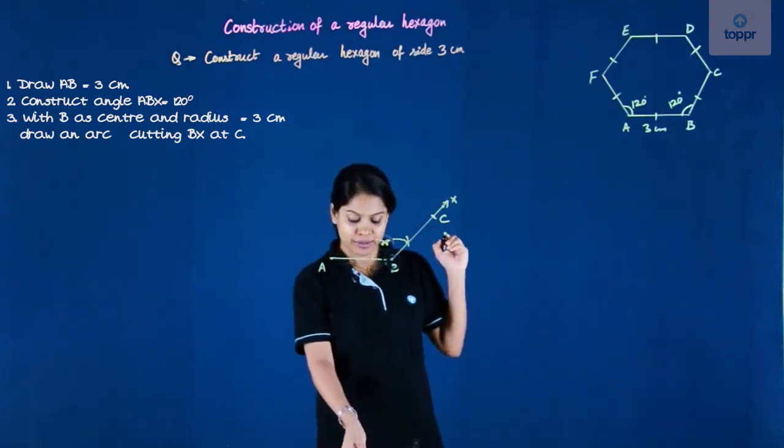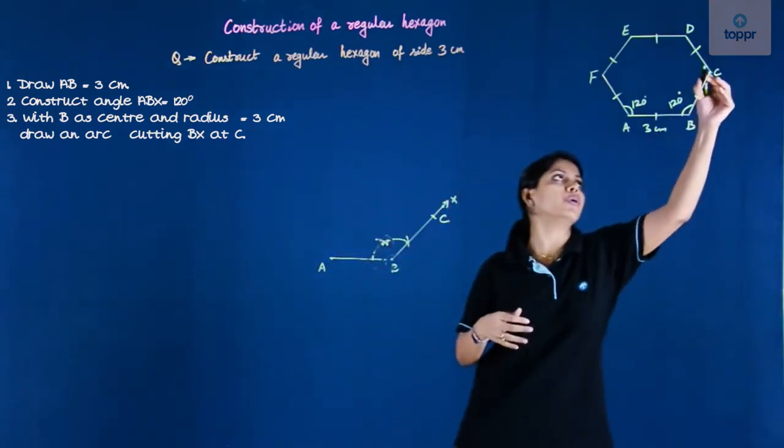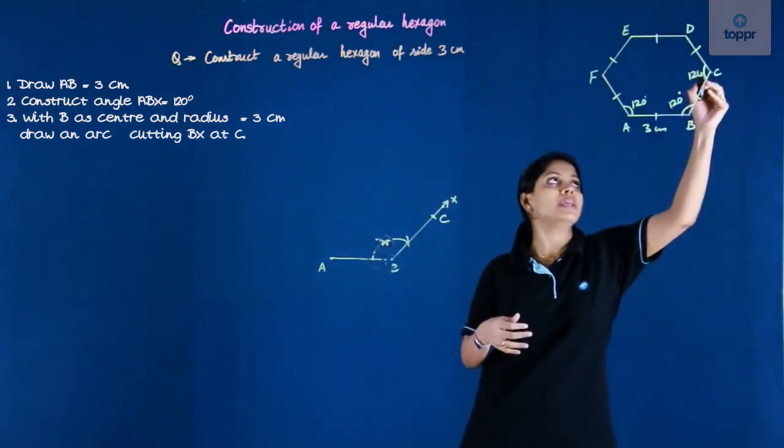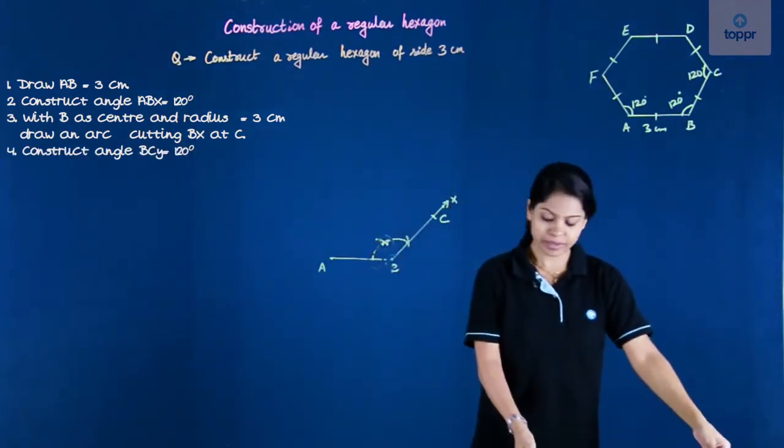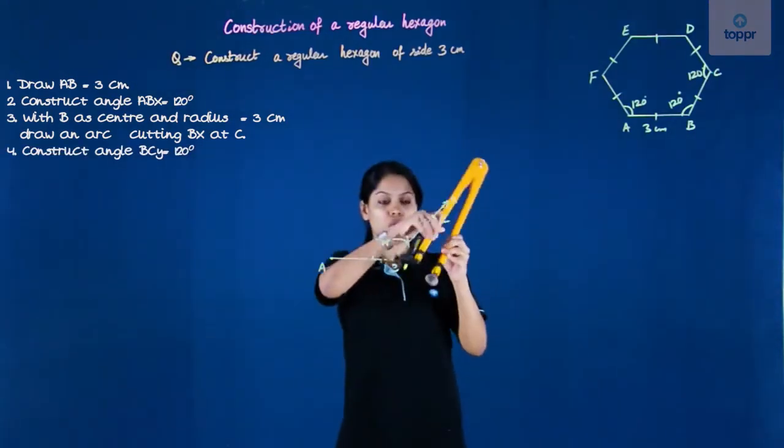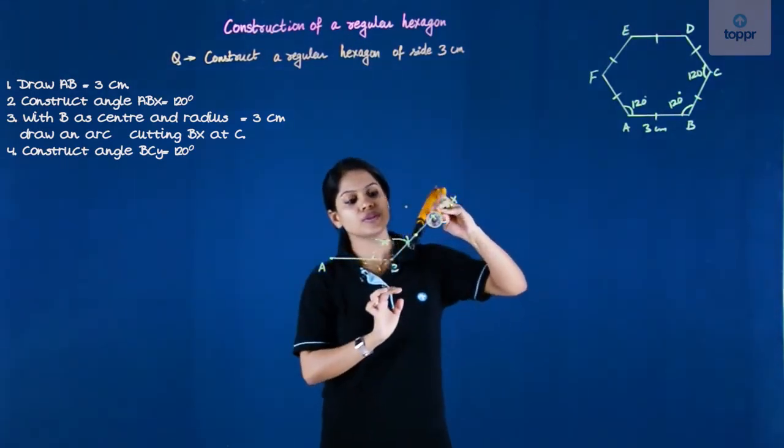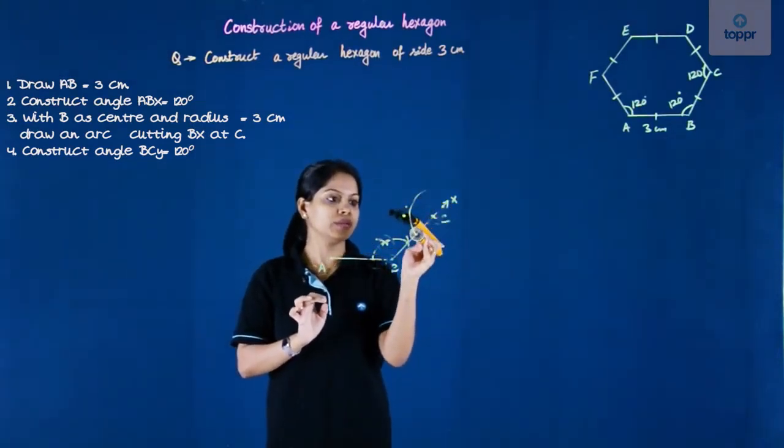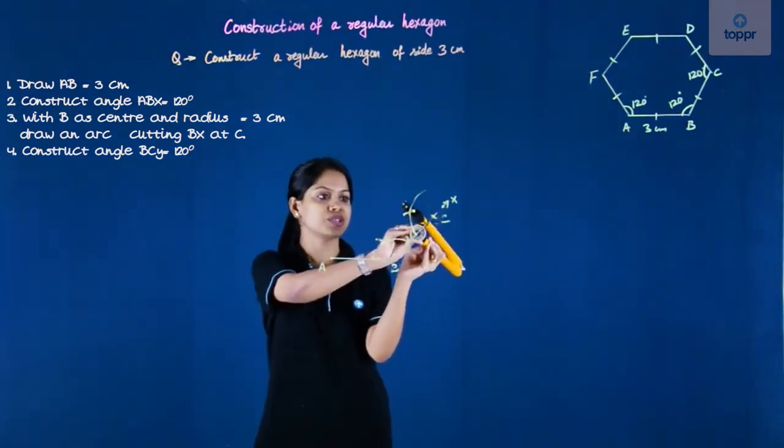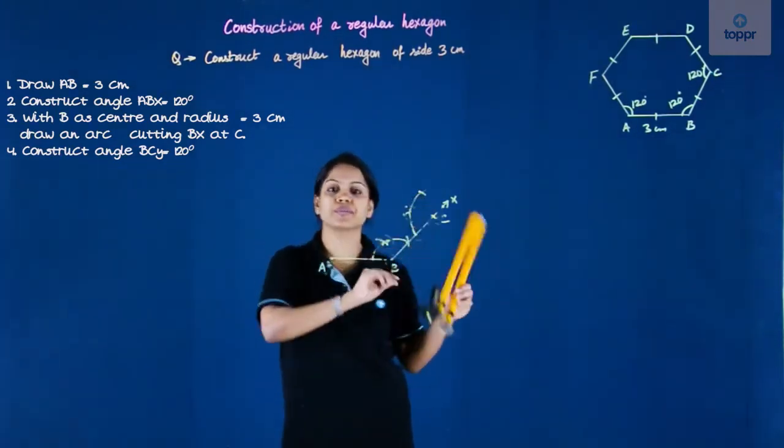Next, what is the angle made at C? Again, because it is a regular hexagon, the angle at every point is 120, so I will need another 120 at the point C. So for that we will again use the compass and we are going to make first a 60 and then a second 60. This is first 60 and then a second 60.